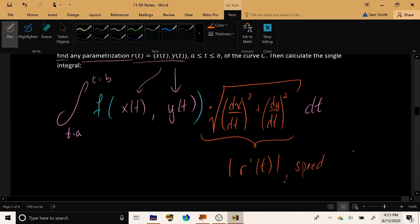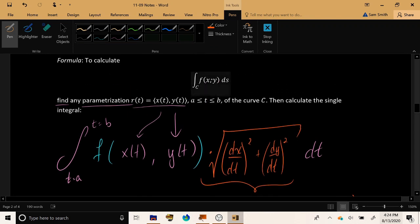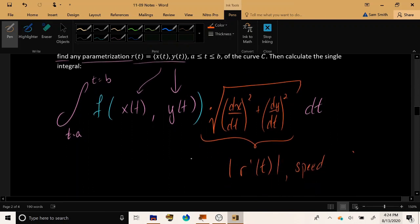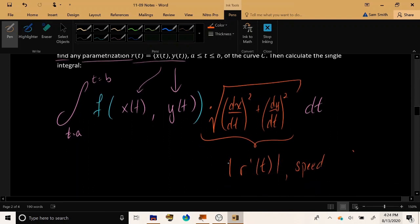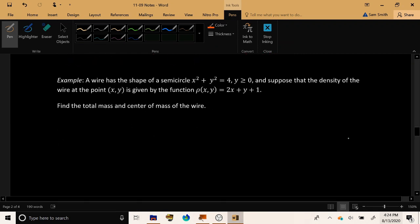That is how we calculate line integrals. Integrate as t goes from a to b, the function where x has been replaced with the x of the parametrization, y has been replaced with the y of the parametrization, and then multiply by the speed of the parametrization, the magnitude of r prime. Let's put that formula into practice in the following example.